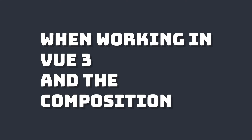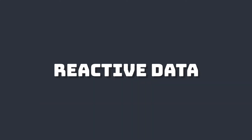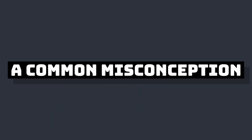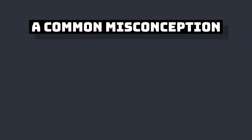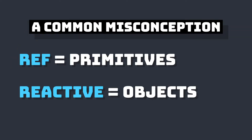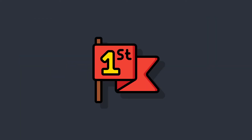When working in Vue 3 and the Composition API, we have two different ways to create reactive data: reactive and ref. A common misconception is that we want to use ref for primitives and reactive for objects. In this video, we're going to take a look at why this isn't necessarily the case.